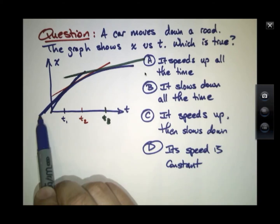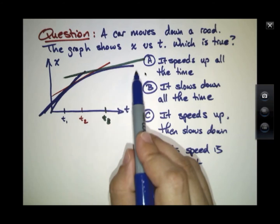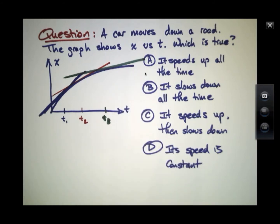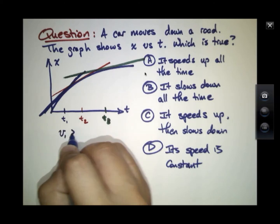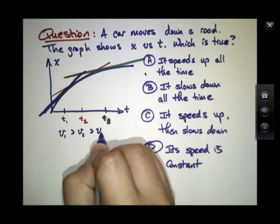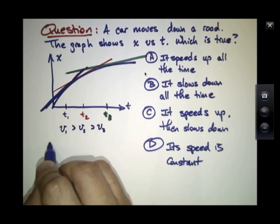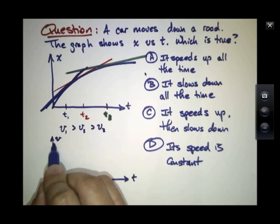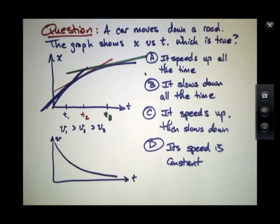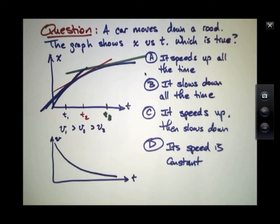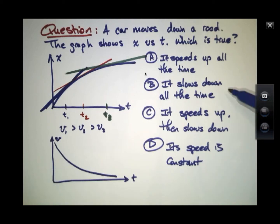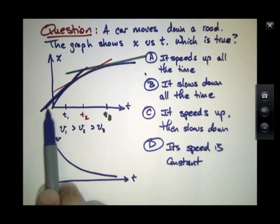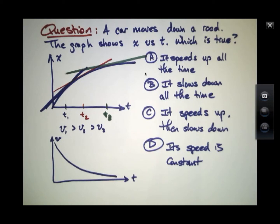One thing you notice is that the slope is largest at the first point and then steadily decreasing. In fact, if I were to draw it even further out, it seems like the slope would approach 0. So v1 is larger than v2, which is larger than v3. If I were to sketch velocity versus time, it looks like the velocity is slowing down — so that would be answer B. Notice the velocity is drawn positive because all these slopes are positive; it's just getting closer and closer to 0.